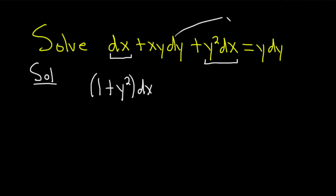And let's take this and bring it over here. So it becomes y dy minus xy dy. Just subtracting it from both sides. And now let's go ahead and factor out a dy here. So I'll write this again, 1 plus y squared dx.